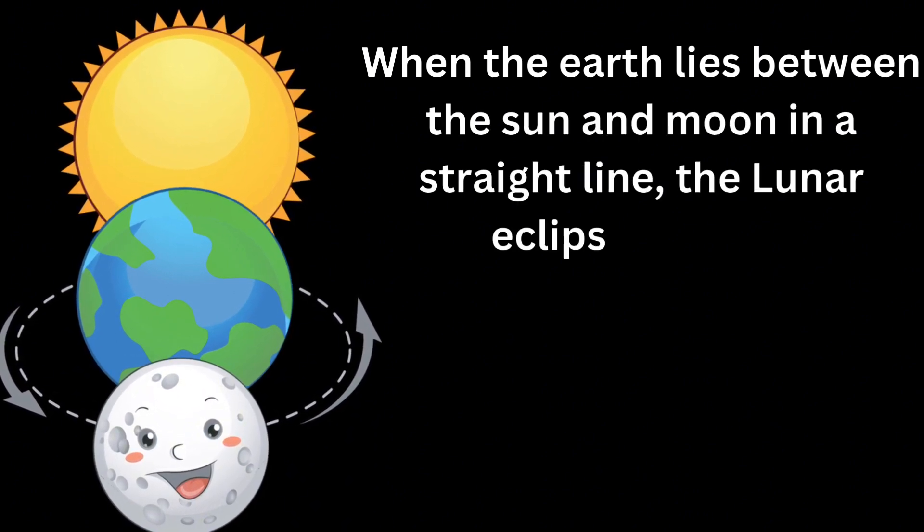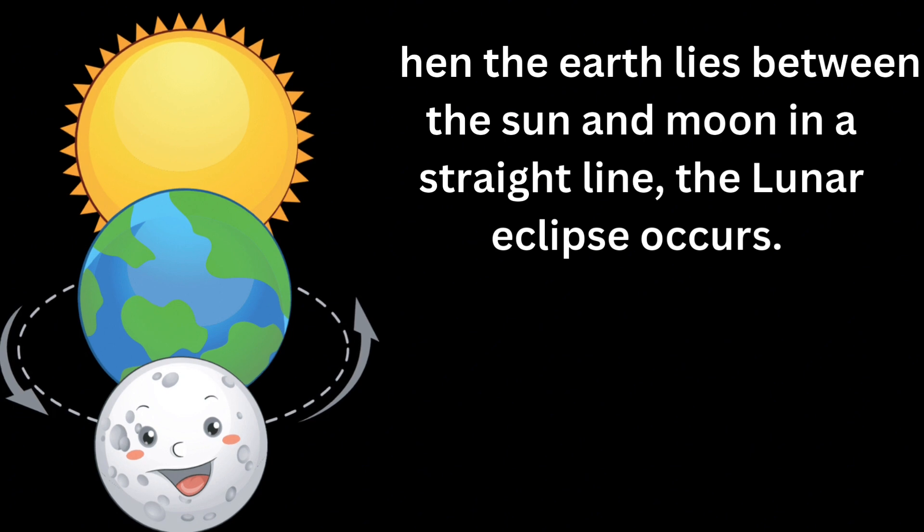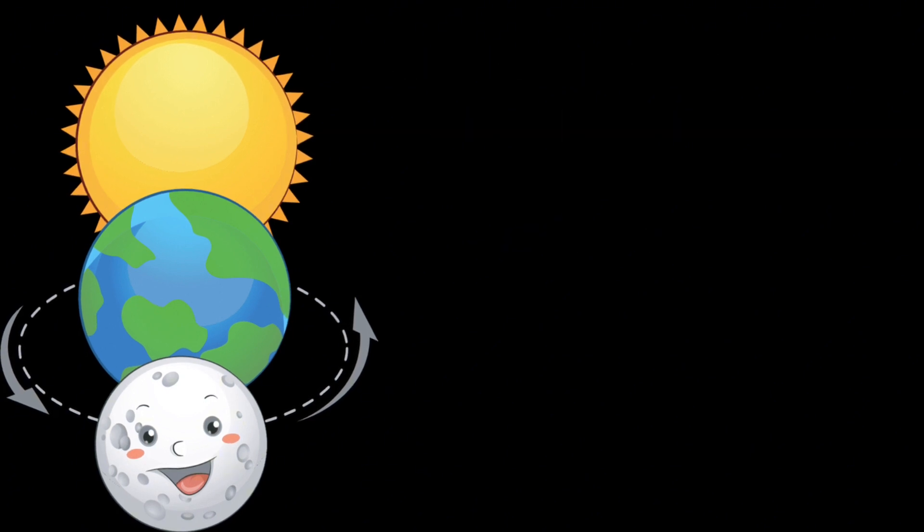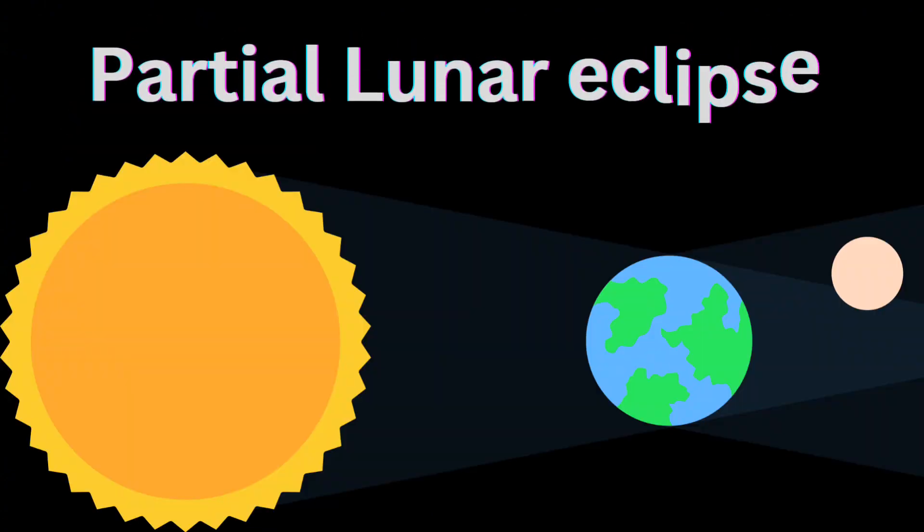A lunar eclipse is of two types: partial lunar eclipse and total lunar eclipse. When the Moon lies in the penumbra cone of the Earth, it gets some light from the Sun and the Moon becomes partially visible. This phenomenon is called a partial lunar eclipse.